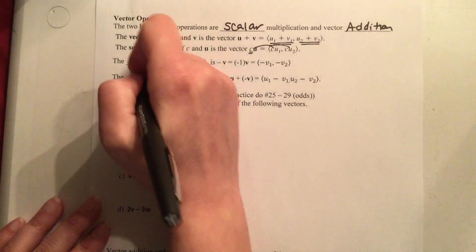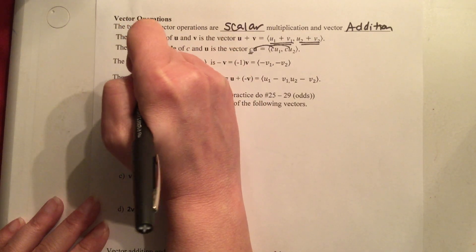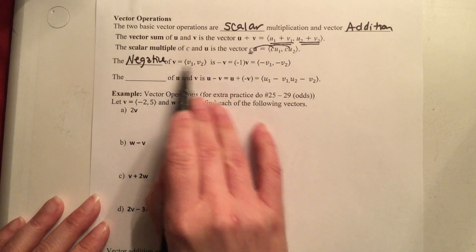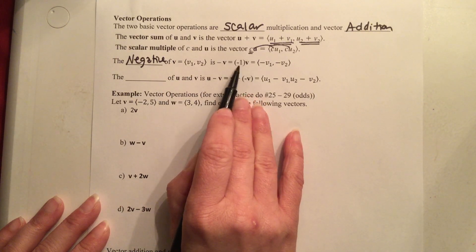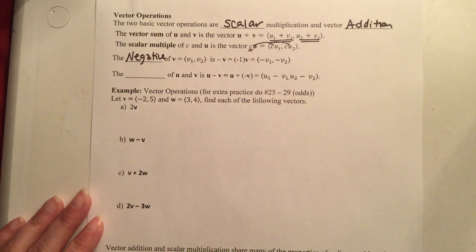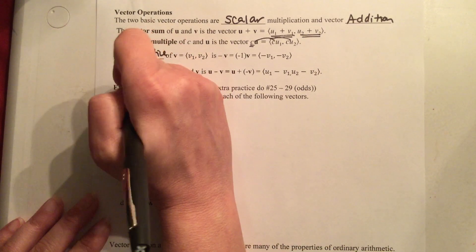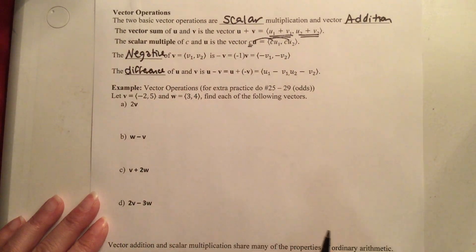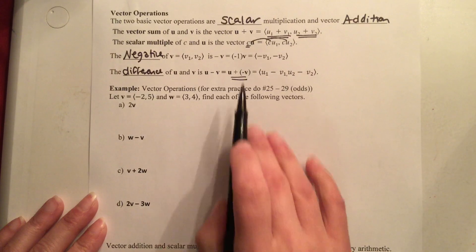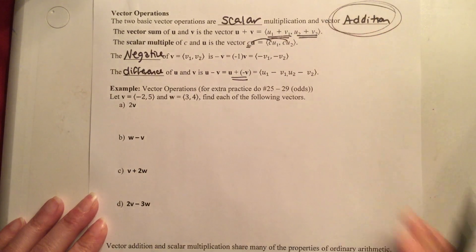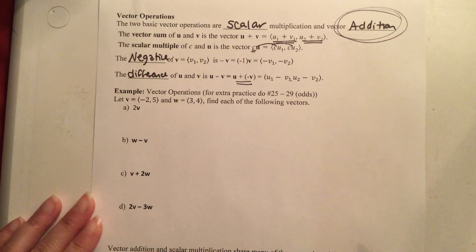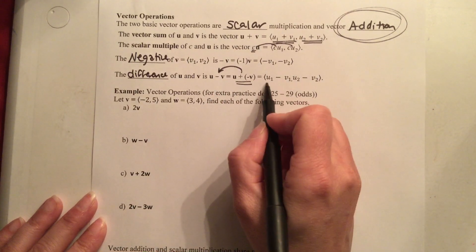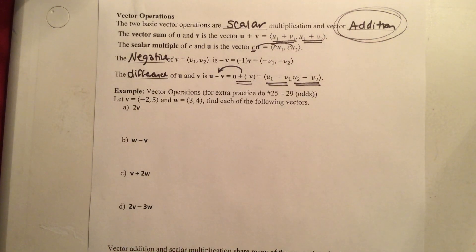If you're doing scalar multiplication, you take the scalar value C and distribute it — it gets multiplied to both the x and the y. If you want the negative of vector V, it's the same as multiplying by −1, so you'd just be changing the signs. If you want to find the difference, remember subtraction is adding a negative. Technically it's still addition — you subtract the two x's and subtract the two y's.